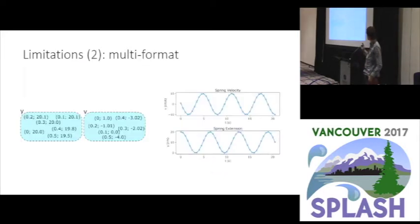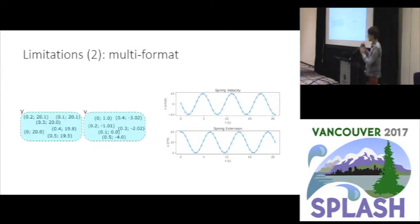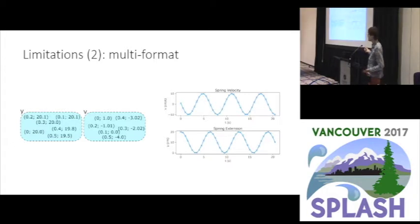Another limitation is that you're often restricted to a single format. If you have the trace output of a causal block diagrams model, you would ideally like to visualize it as a plot of the current velocity and the extension of the spring over time. Many tools currently do not support this and just say every element in the abstract syntax has a visualization icon, so if your abstract syntax just contains tuples of time and current value, you will get a visualization like this.